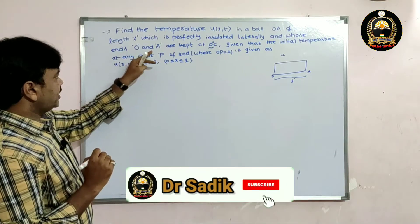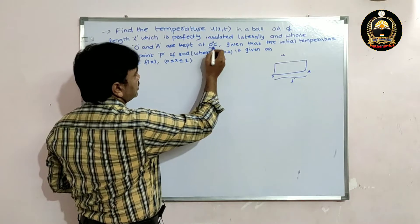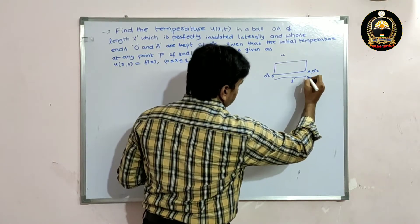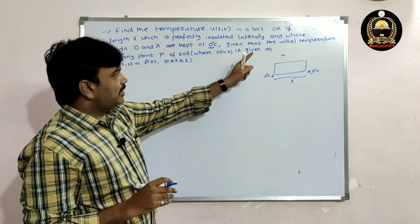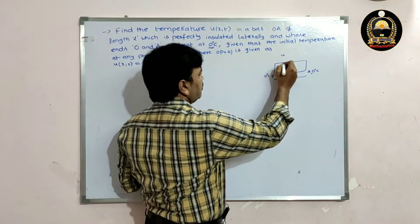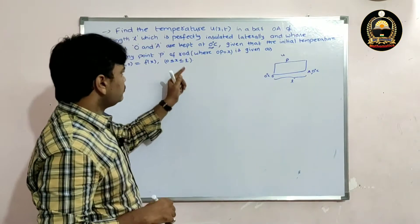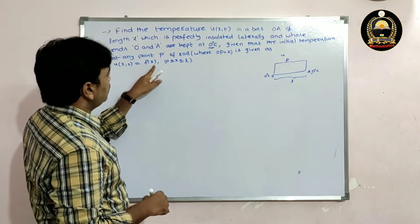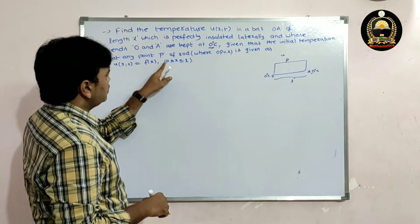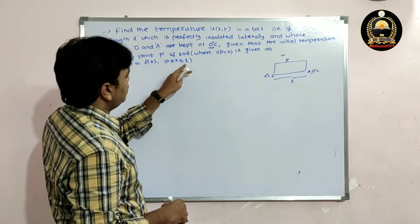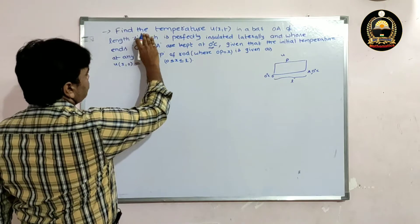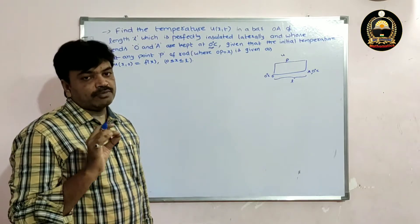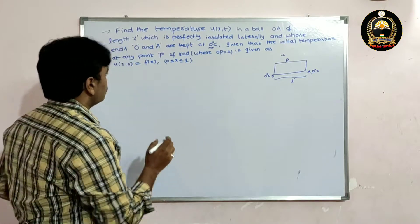Both ends O and A are kept at zero degrees centigrade. The initial temperature at any point P of the rod, where OP equals x, is given as u(x, 0) = f(x) for 0 < x ≤ L. Whenever we are asked to find the temperature along the x-axis, it is a one-dimensional heat flow equation, so we proceed to the solution.